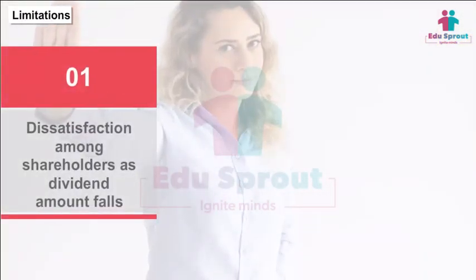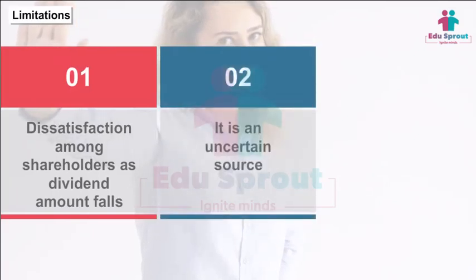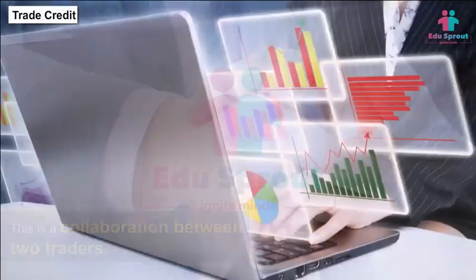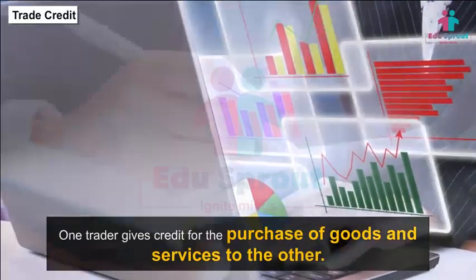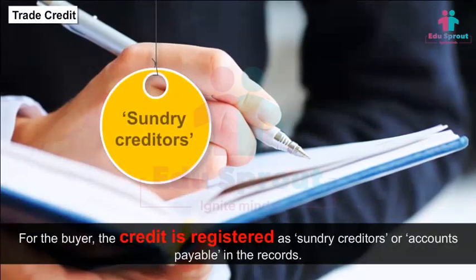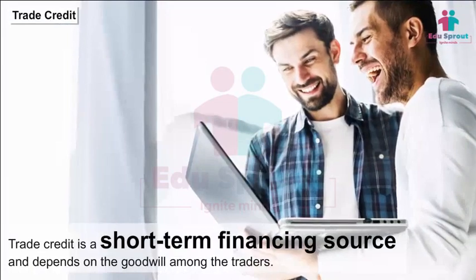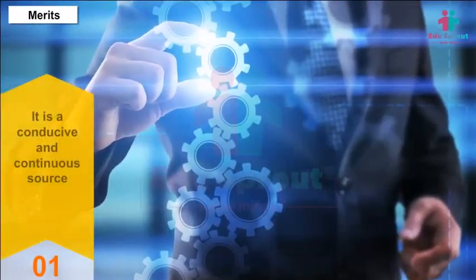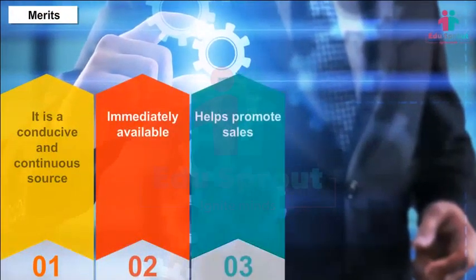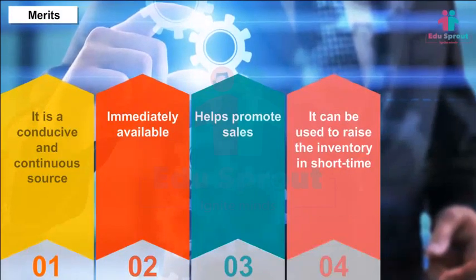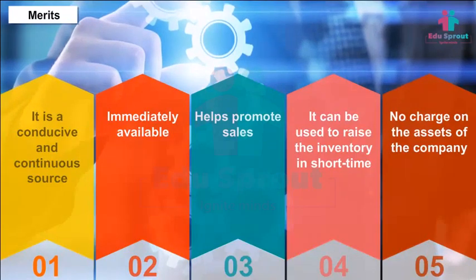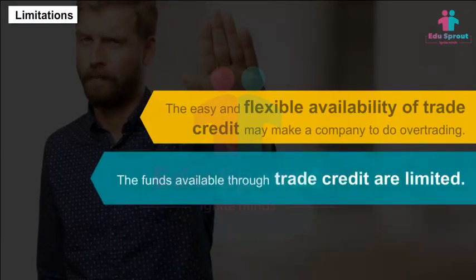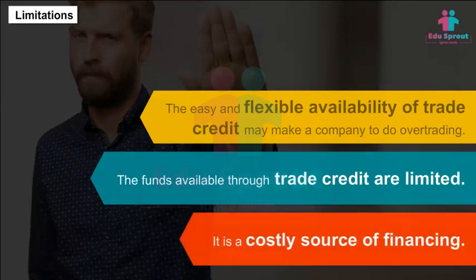Limitations of retained earnings: dissatisfaction among shareholders as dividend amounts fall, it is an uncertain source, and may lead to unproductive utilization of funds. Trade Credit: This is a collaboration between two traders where one trader gives credit for the purchase of goods and services to the other. For the buyer, the credit is registered as sundry creditors or accounts payable. Trade credit is a short-term financing source and depends on goodwill among traders. Merits: conducive and continuous source, immediately available, promotes sales, raises inventory in short time, and no charge on the company's assets. Limitations: may lead to over-trading, funds available are limited, and it is a costly source of financing.